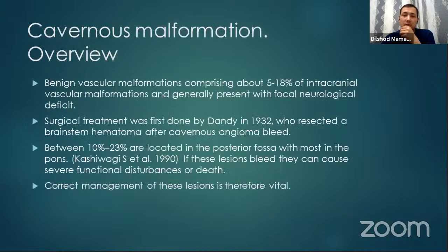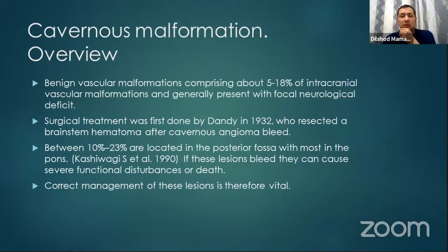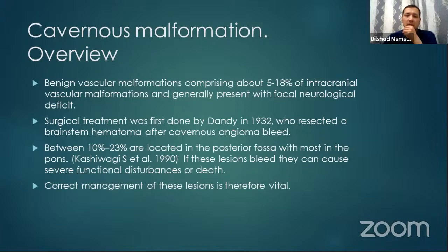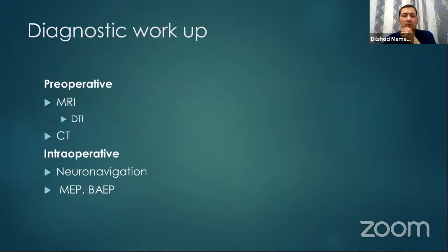Benign vascular malformations comprise about 5% to 18% of intracranial vascular malformations and generally present with focal neurological deficits. The surgical treatment of brainstem CCM was first performed by Dr. Dandy in 1932, who resected a brainstem hematoma following cavernous angioma. Between 10% and 23% are located in the posterior fossa, most in the pons. If these lesions bleed, they can cause severe neurological deficit or even death, making correct management very important. Intraoperatively, it is essential to use neural navigation, motor evoked potentials, and brainstem evoked potentials.